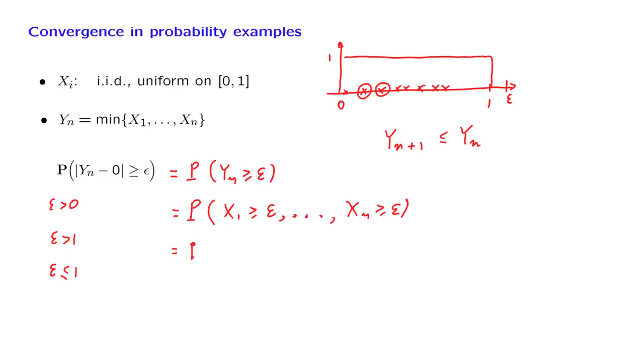Now, because of independence, this is the product of the probabilities that each one of the random variables is larger than or equal to epsilon.